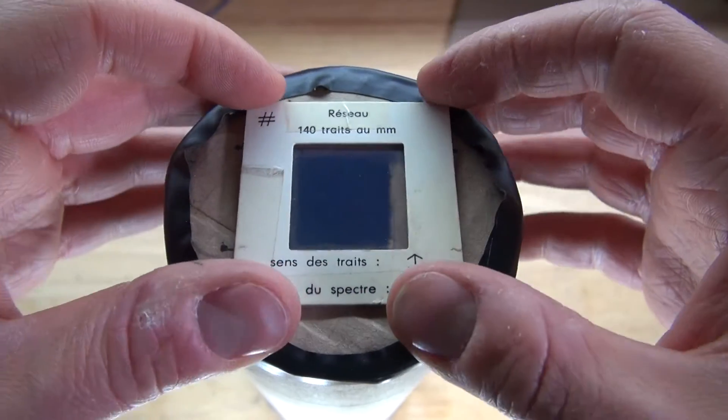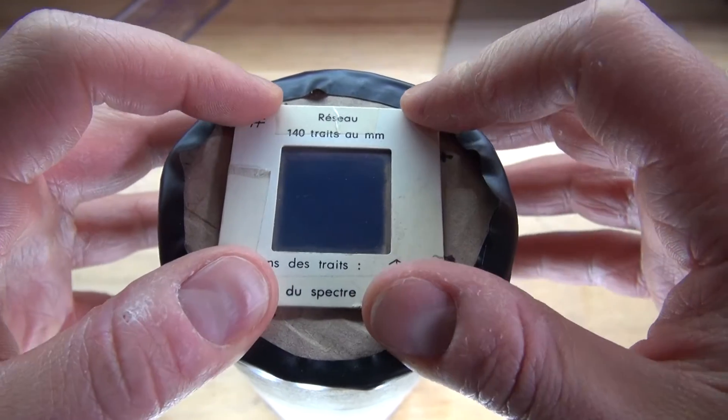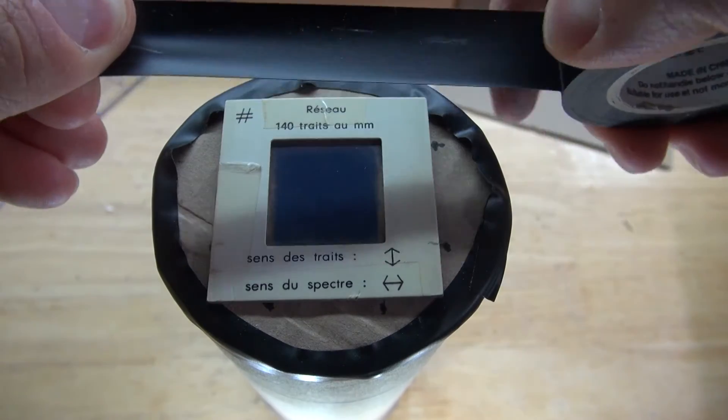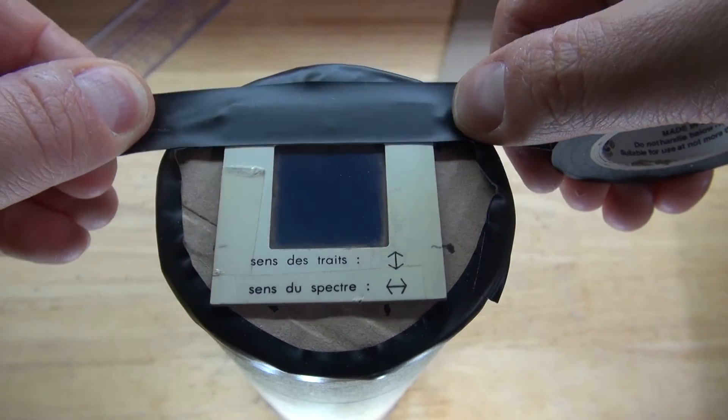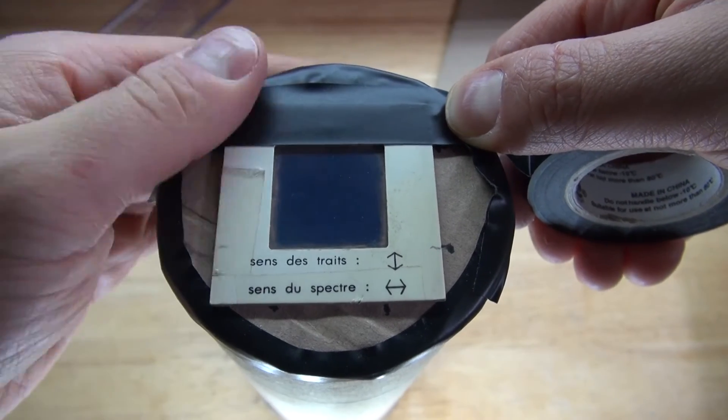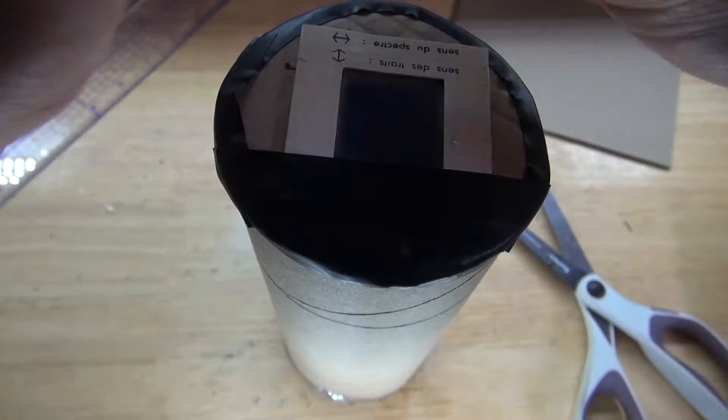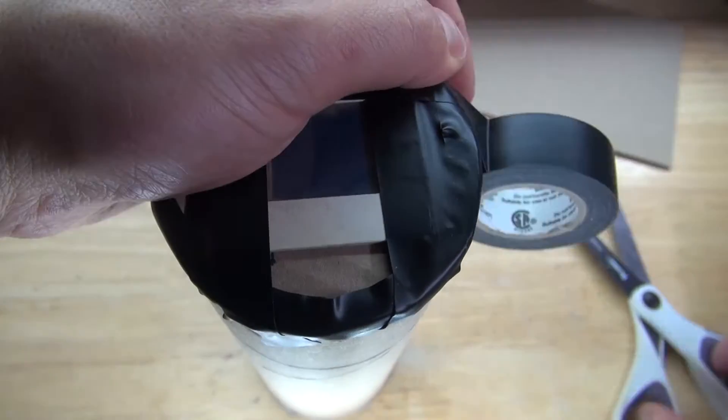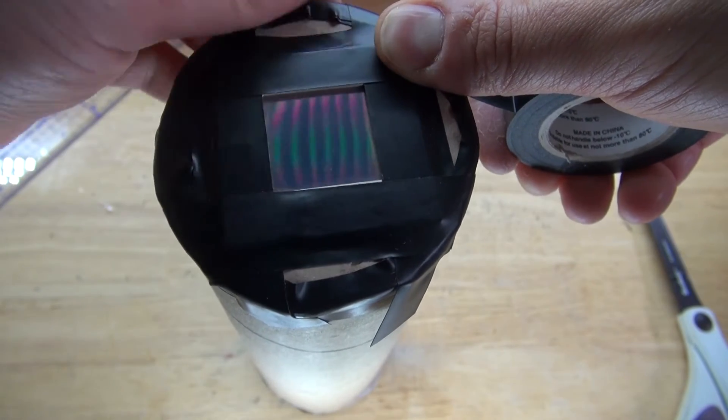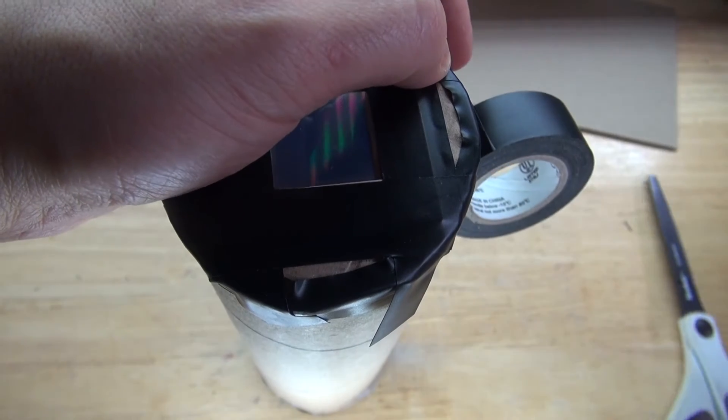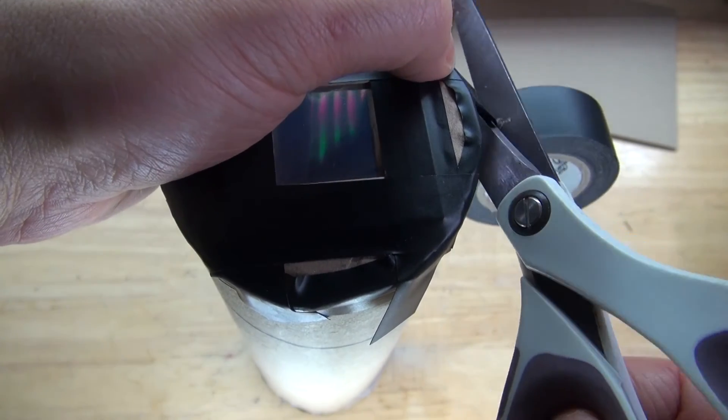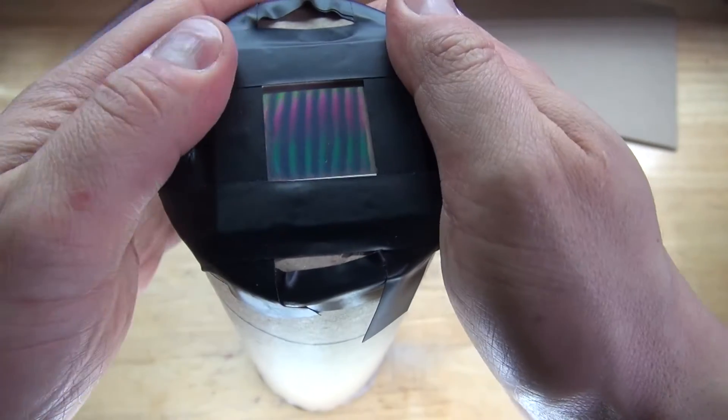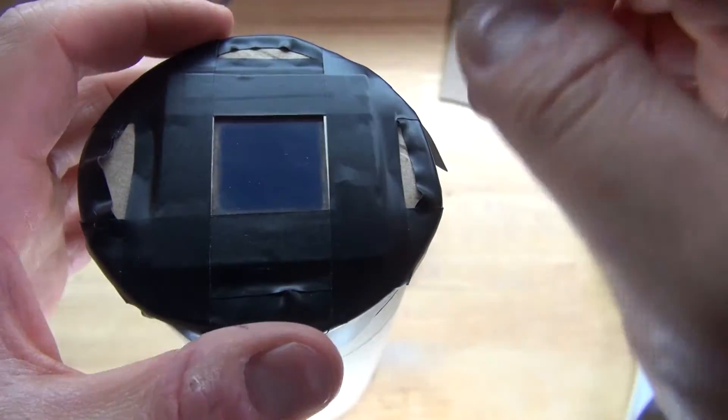Next, take the prism material and put it on top of the square. Make sure it's perfectly centered. Next, take some electrical tape and tape down all four sides. And there, it should look just like this.